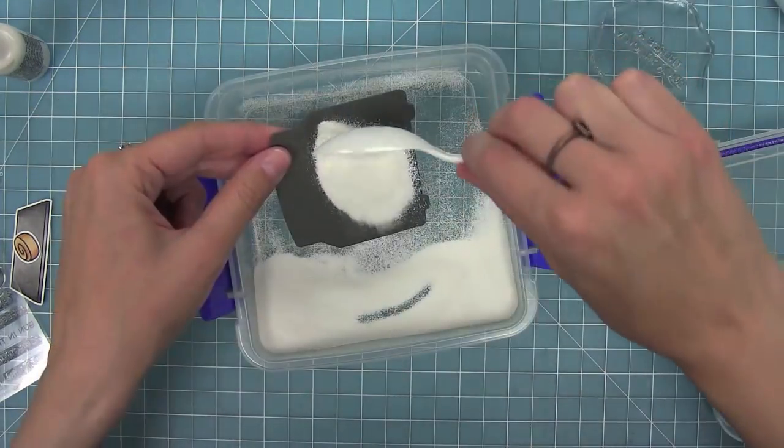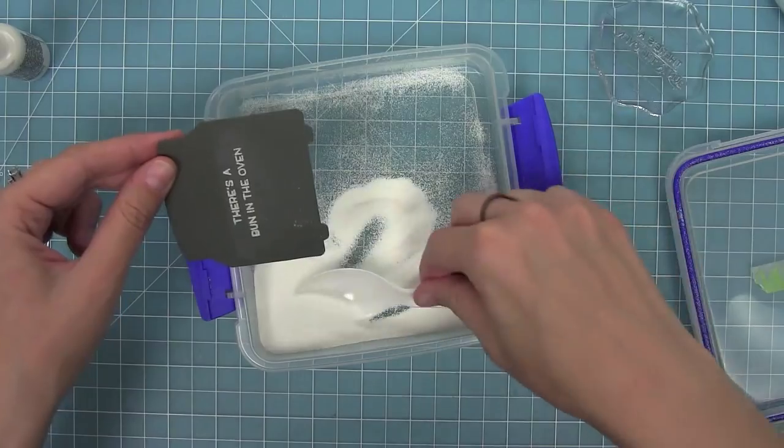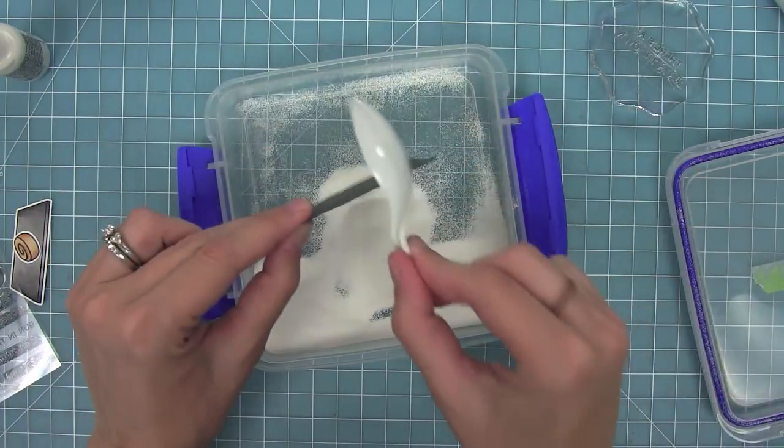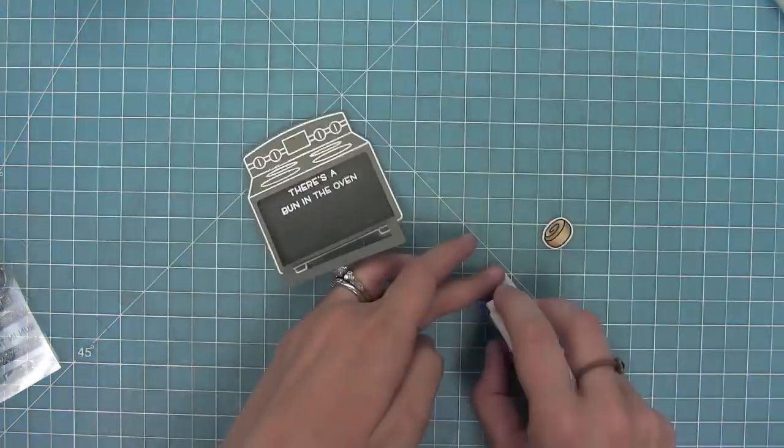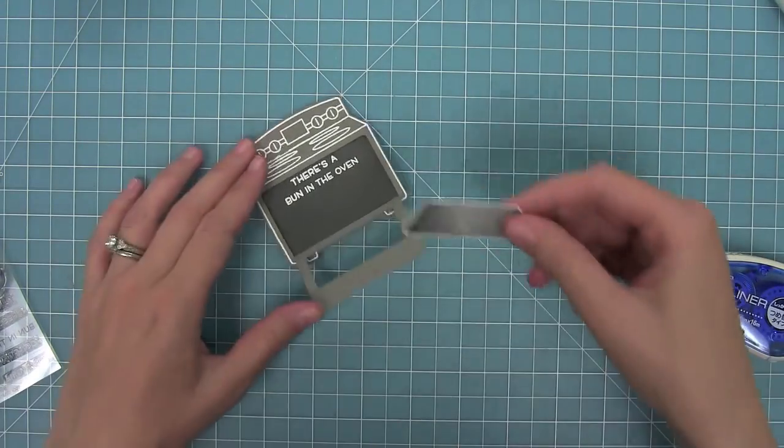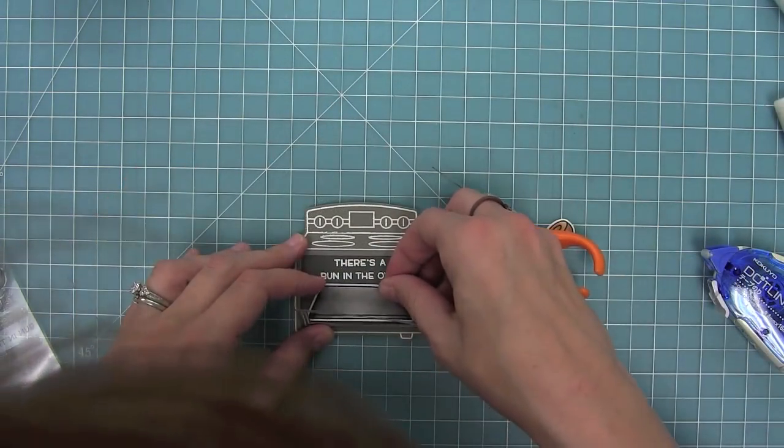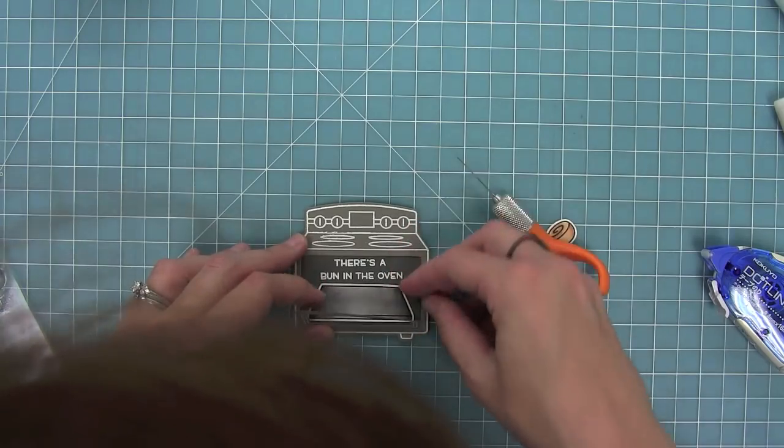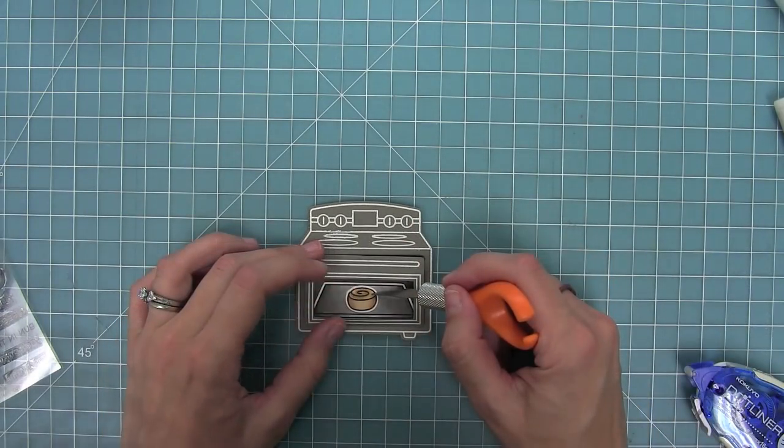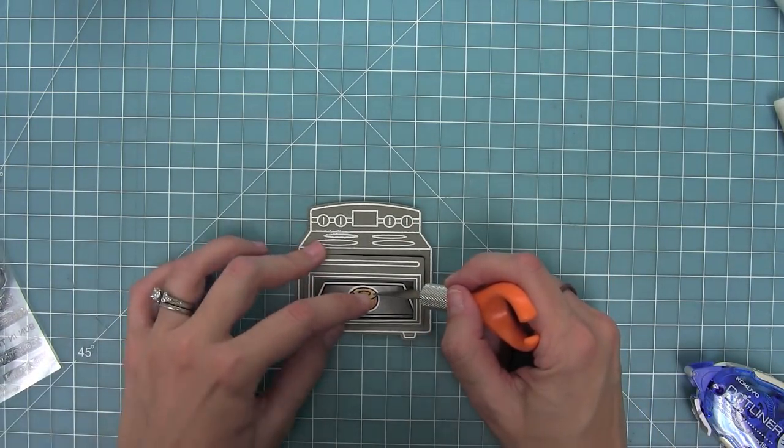I'm stamping there's a bun in the oven in some Versamark ink and white heat embossing so that everything coordinates. This is going to be my hidden sentiment on the inside. Then I'm going to add this little cookie tray that comes from the Sprinkle with Joy set and add my bun from Bun in the Oven to that.